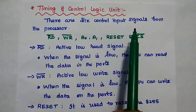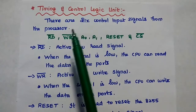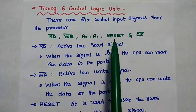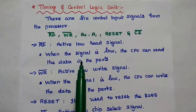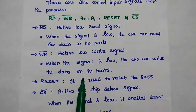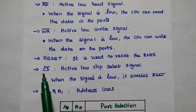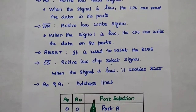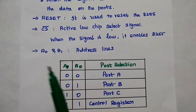The Timing and Control Logic unit is a very important unit which controls the operation of the entire 8255A. There are 6 control input signals from the processor: Read bar, Write bar, A0, A1, Reset, and CS bar. Read bar is an active low read signal — when the signal is low, the CPU can read data from the ports. Write bar is an active low write signal — when the signal is low, the CPU can write data to the ports. Reset is used to reset the 8255. CS bar is also an active low signal — when it is low, it enables the PPI.